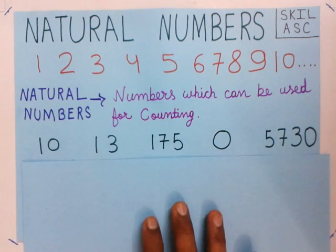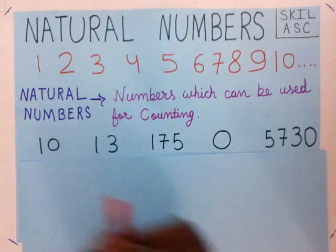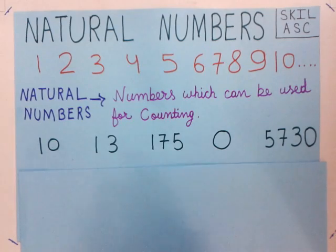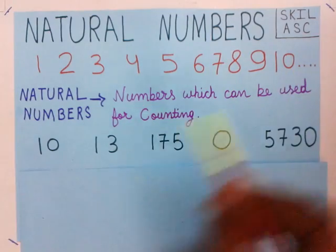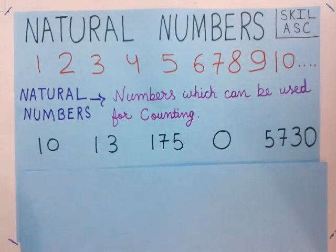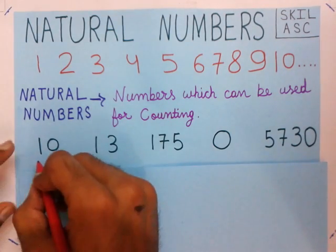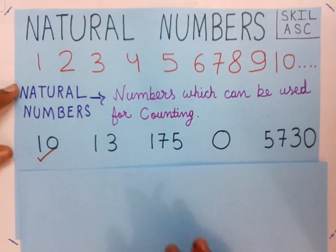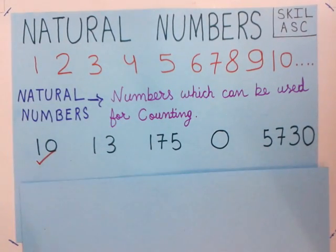Let's take a few examples. Is 10 a natural number or not? We count as 1, 2, 3, 4, 5, 6, 7, 8, 9, 10 — 10 is coming while counting, so 10 is used while counting. Therefore, 10 is a natural number.